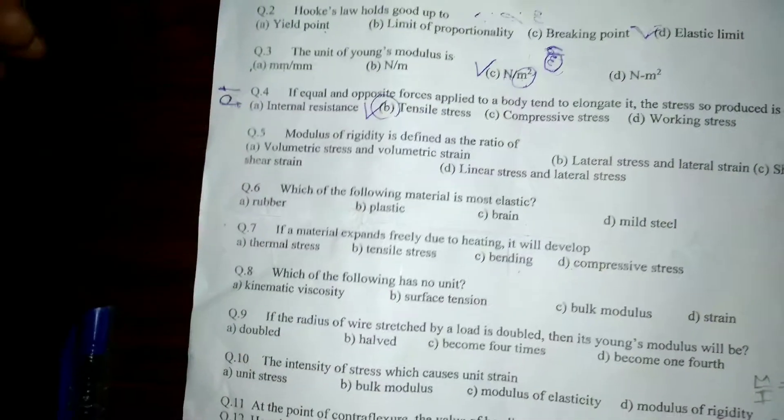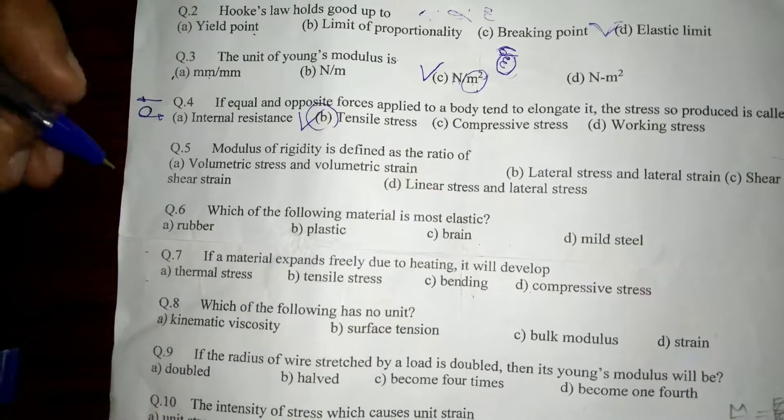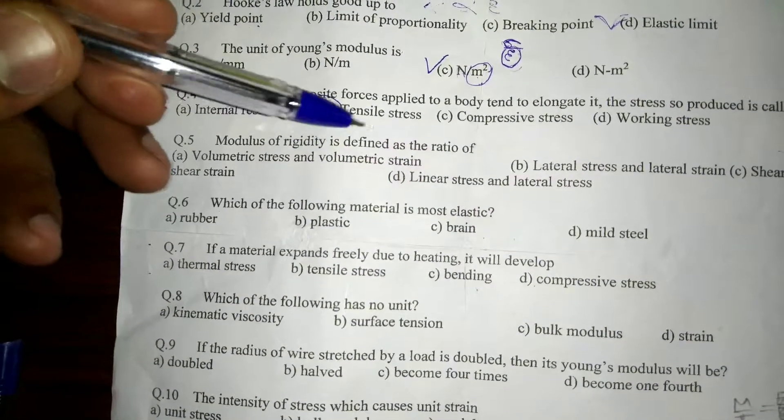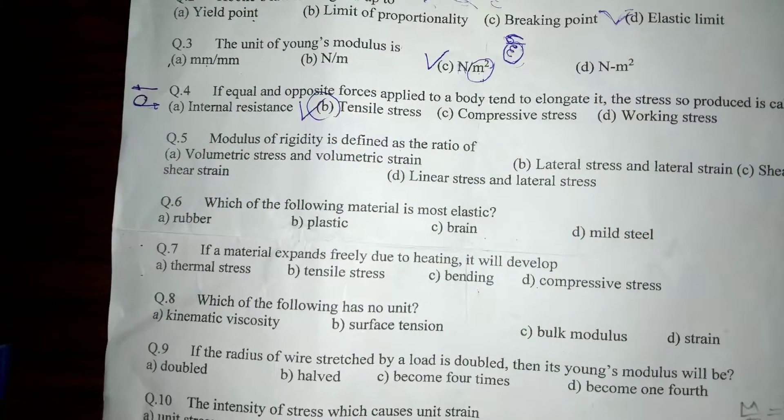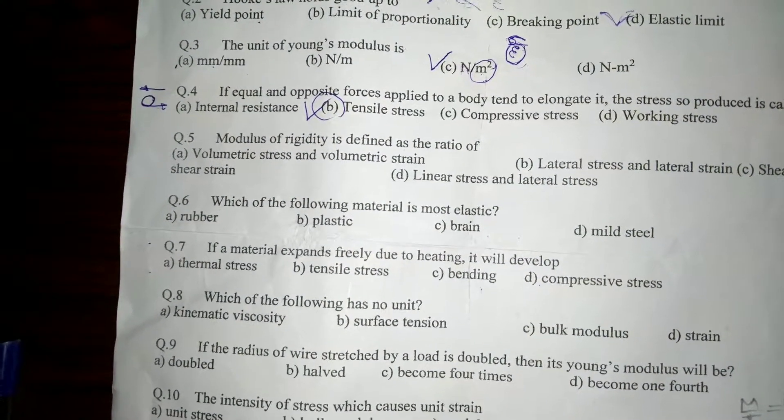So the answer is tensile stress. The next question: modulus of rigidity is defined as the ratio of shear stress to shear strain. The option is C: shear stress divided by shear strain.